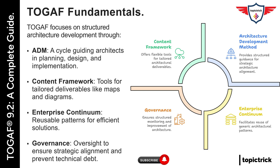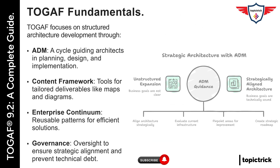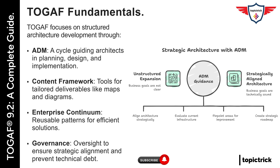Let's connect this to the software industry. Imagine you're part of a SaaS company that's scaling quickly — say, a project management platform like Monday.com or Asana. The business wants to expand into new markets, integrate with more third-party tools, and move parts of the system to the cloud. You can't just start coding features or migrating servers. You need to first understand the business goals, assess existing systems, identify gaps, and plan a path forward. That's where the ADM provides structured guidance, ensuring the architecture you build isn't just technically sound, but strategically aligned.